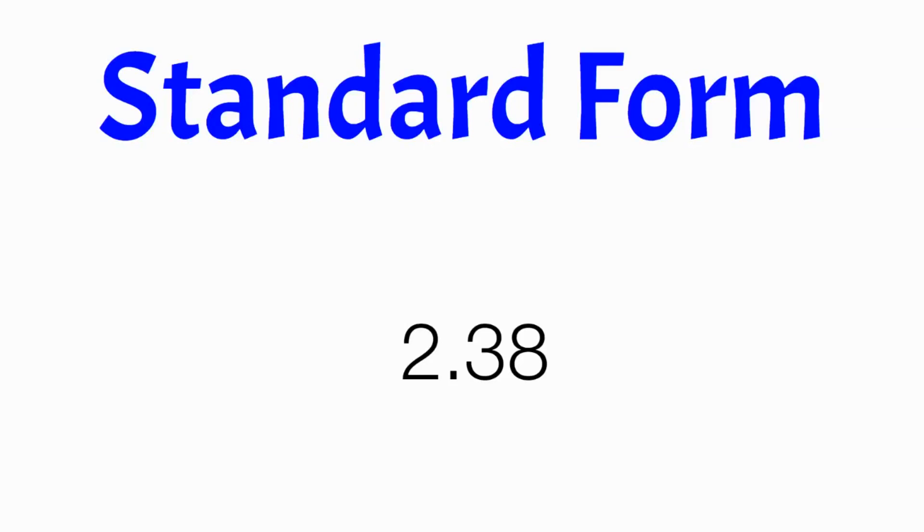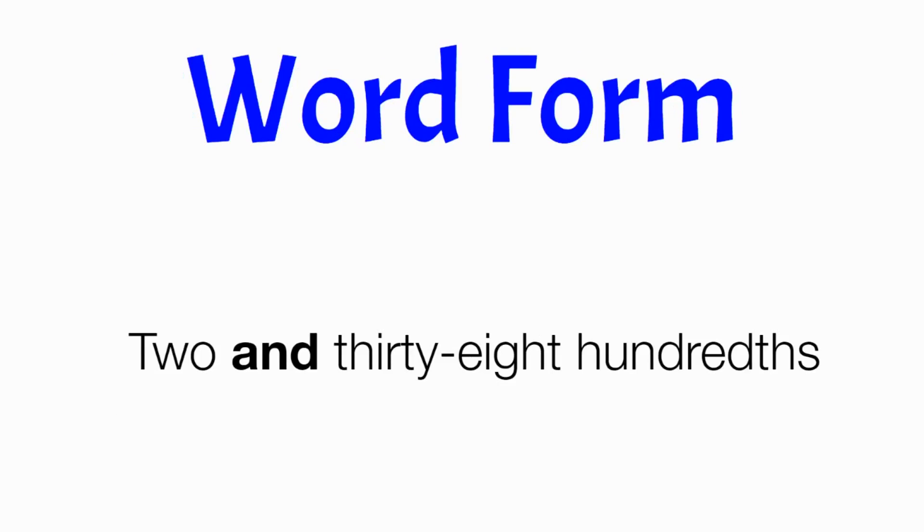Here is a number in standard form. This number is 2 and 38 hundredths, and we wrote it with numbers, which is what standard form is. Word form is when we, instead of writing with numbers, we write it with words. So now I've changed it to 2 and 38 hundredths, and you might notice that the word and I've made bold because I want you to remember that when we're reading a decimal, and is our decimal point. So 2 decimal point 38 hundredths, 2 and 38 hundredths.